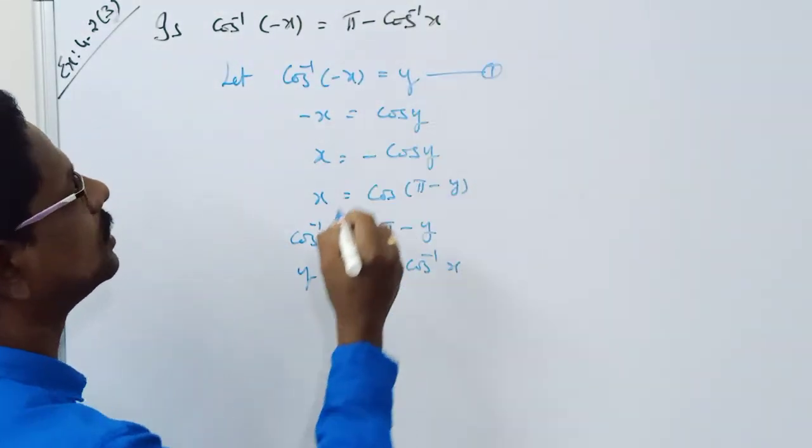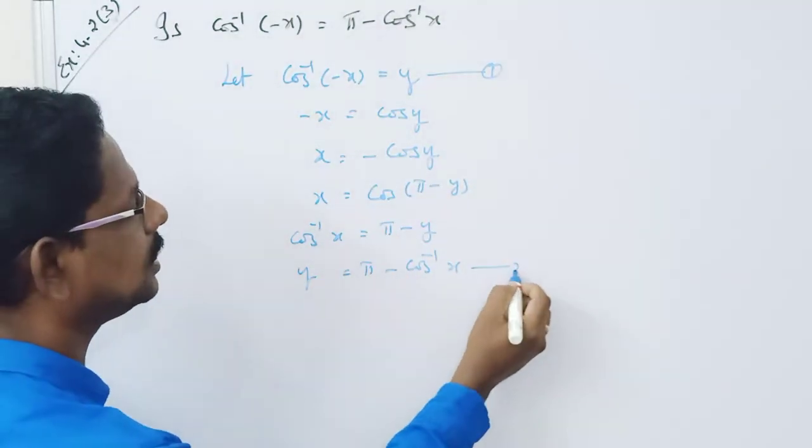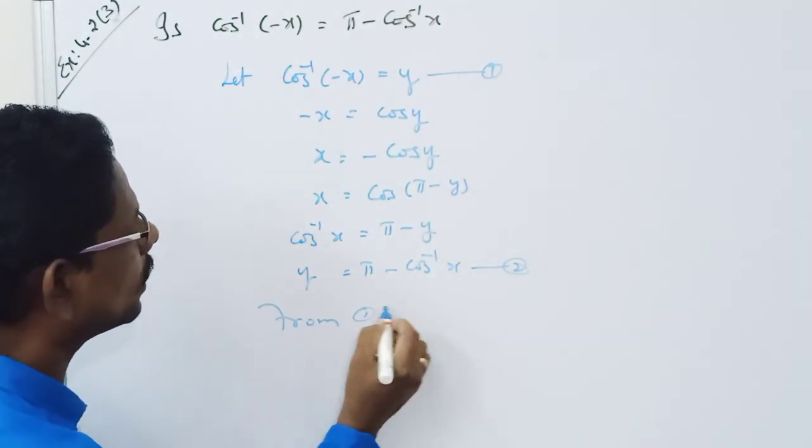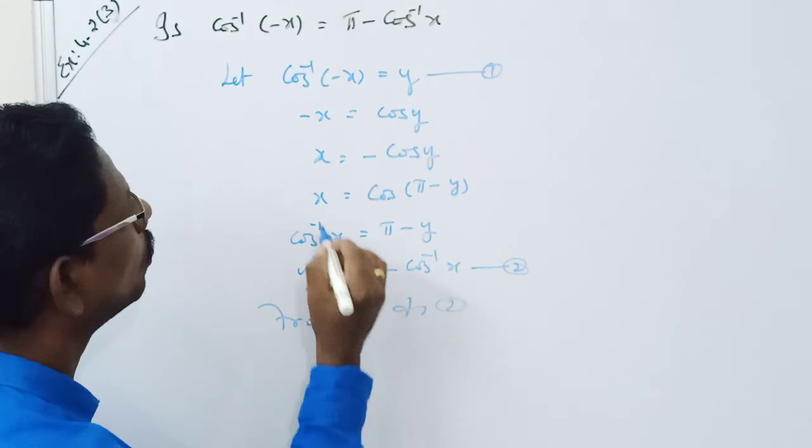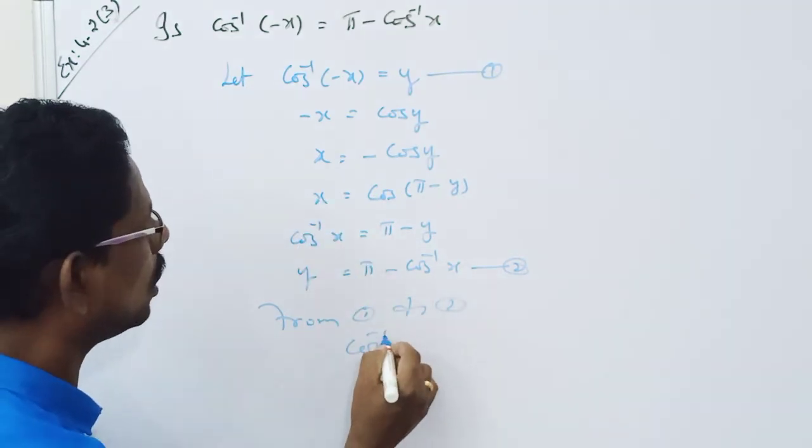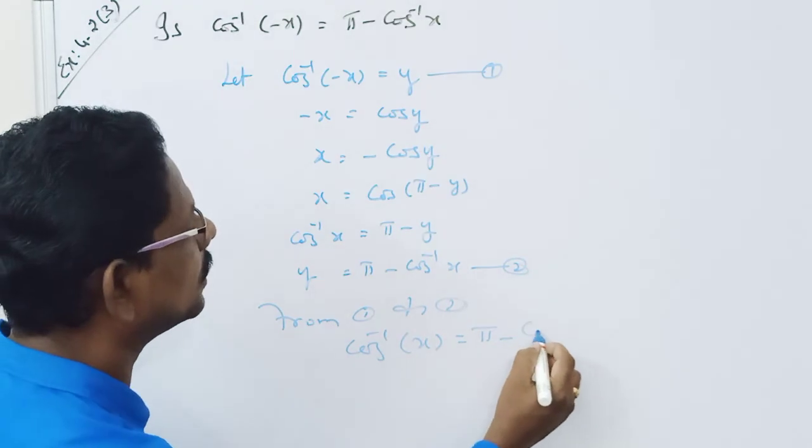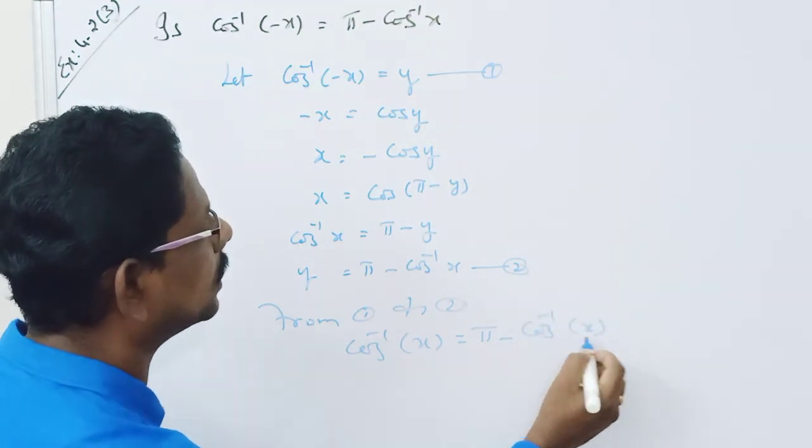So you see here y is equal to, and also see here y is equal to. Therefore, from equations 1 and 2, cos inverse of minus x is equal to pi minus cos inverse of x.